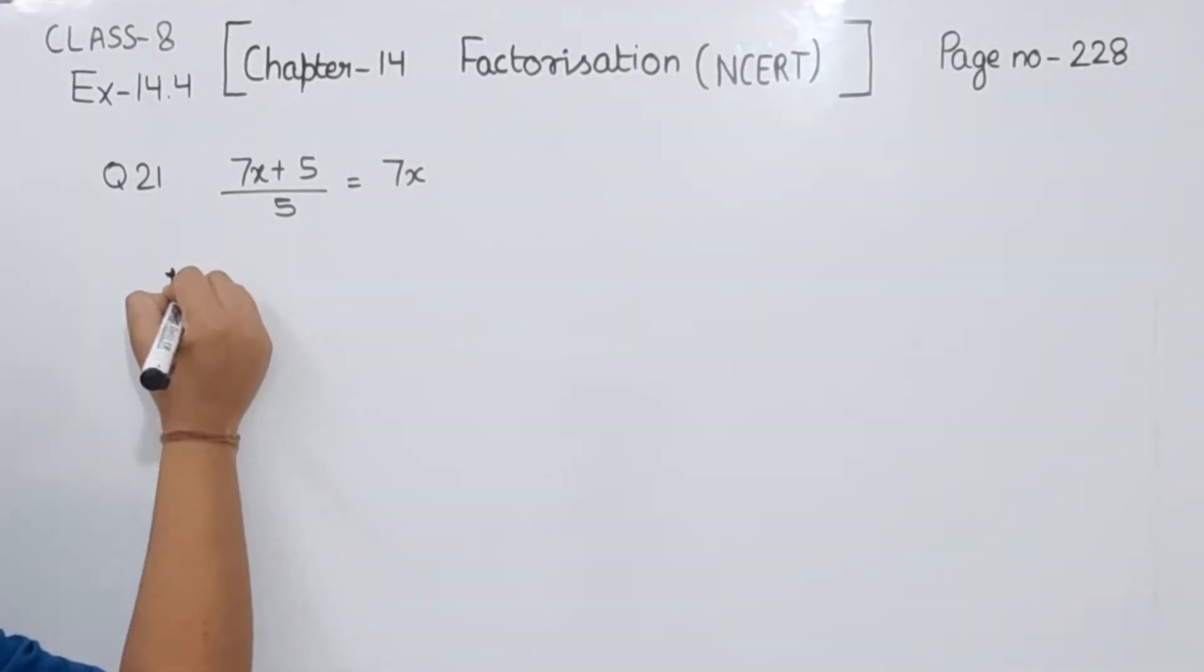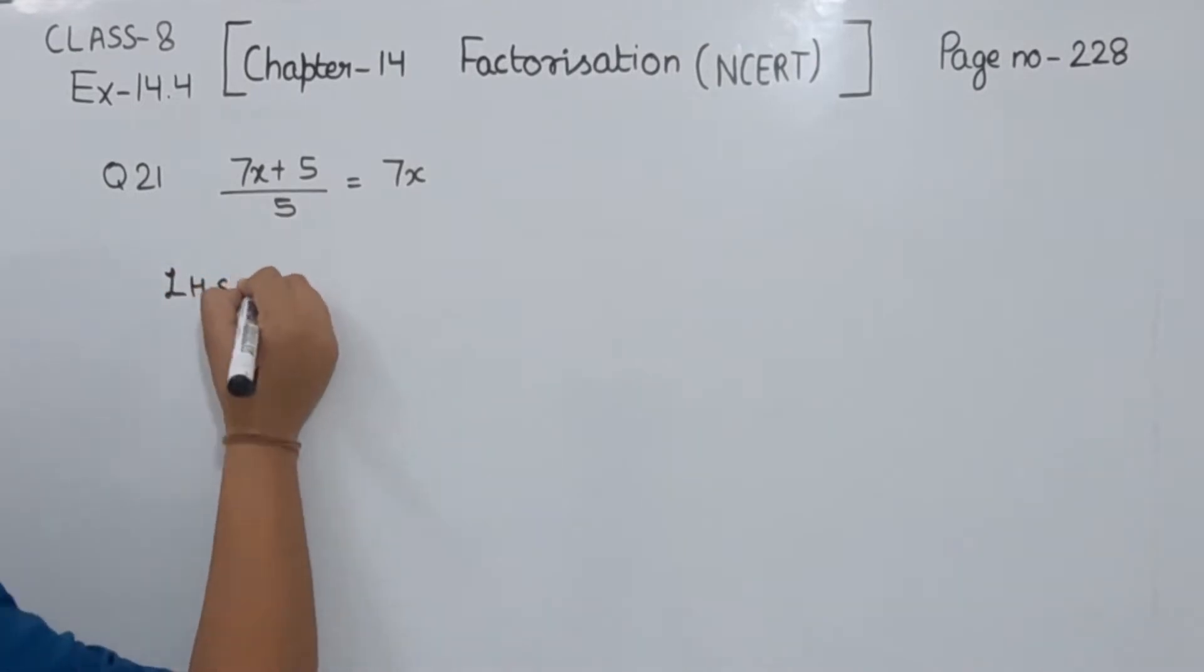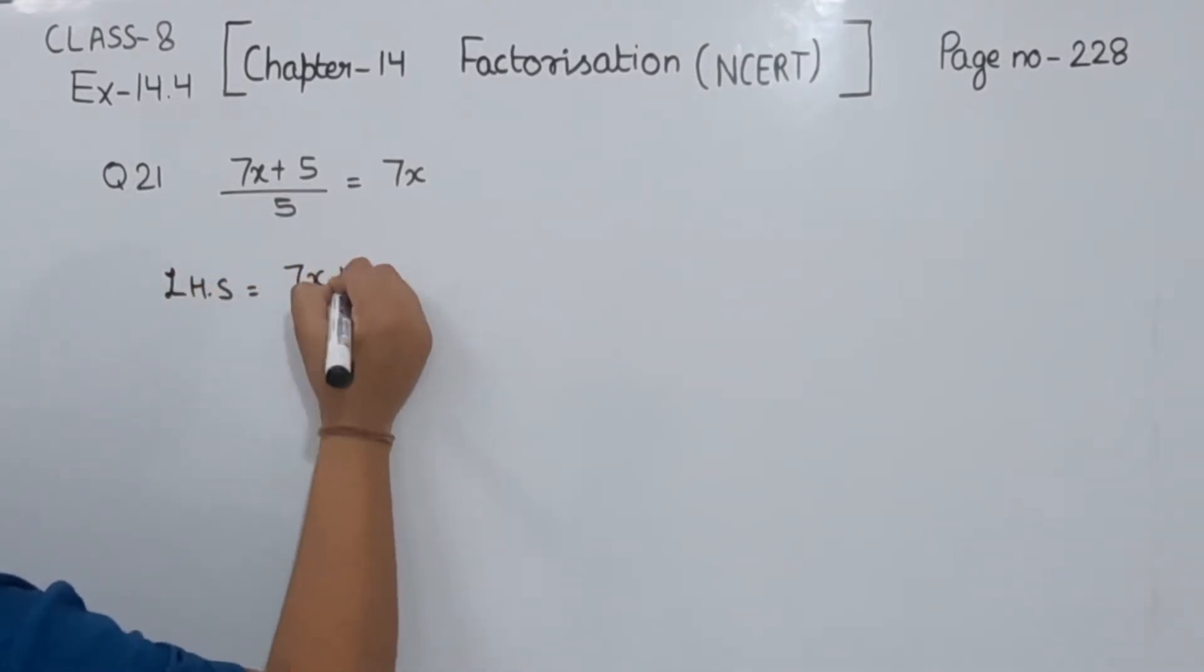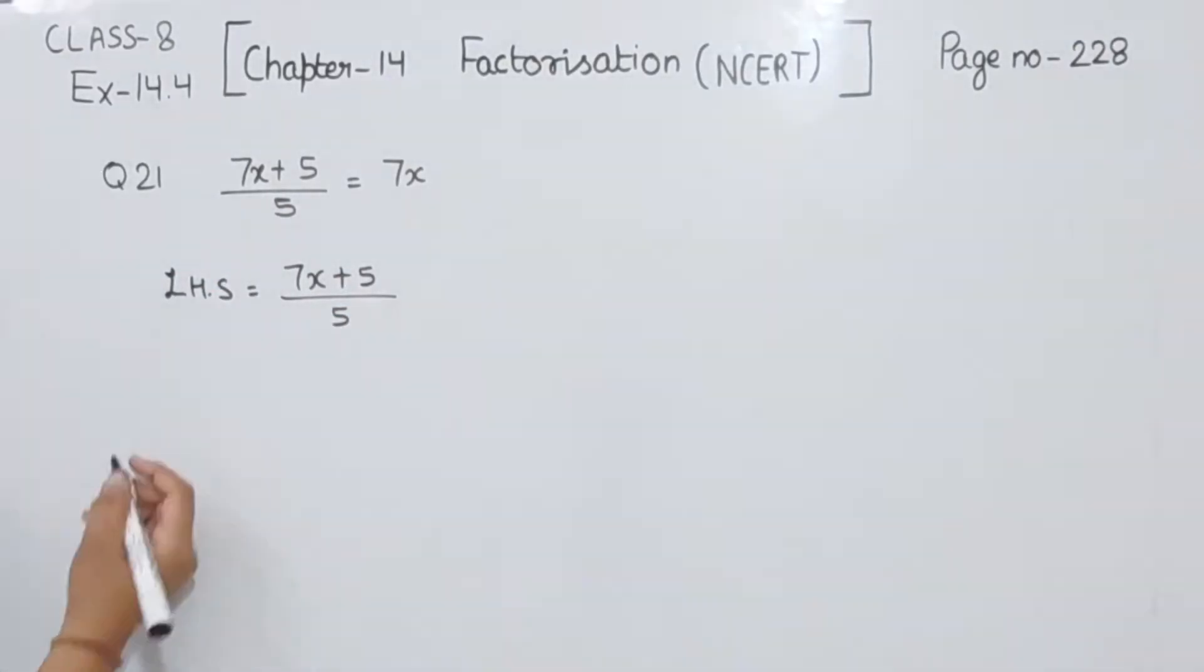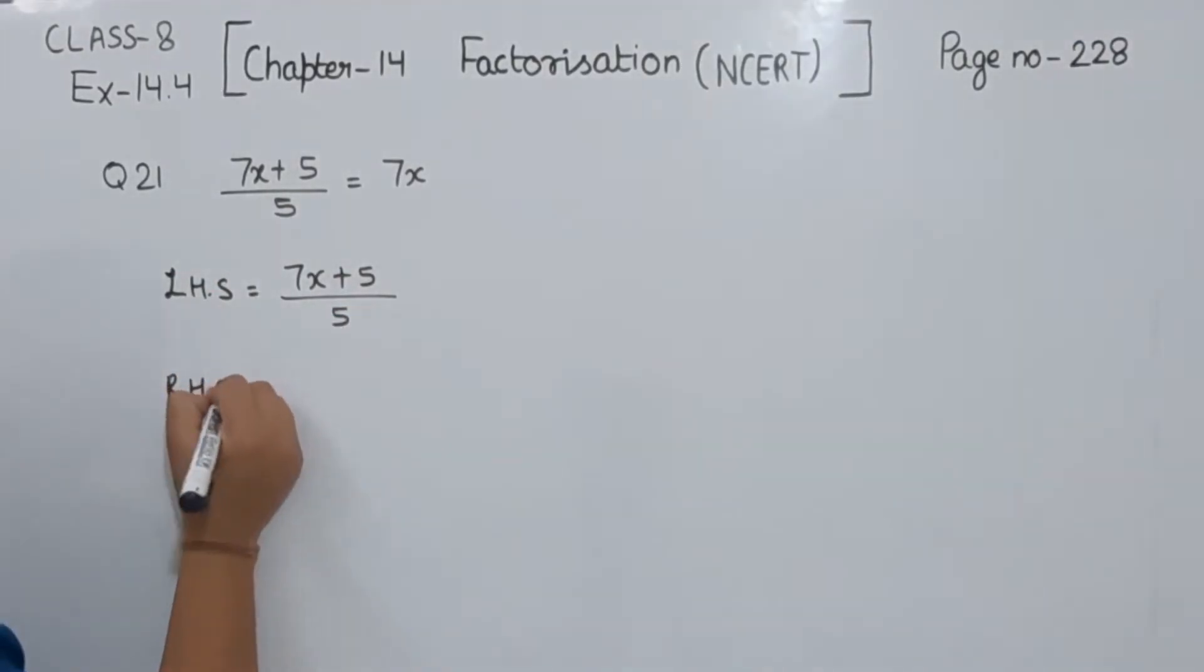First of all, we are going to take the left hand side. This is equal to (7x + 5) divided by 5. And the right hand side is equal to 7x.